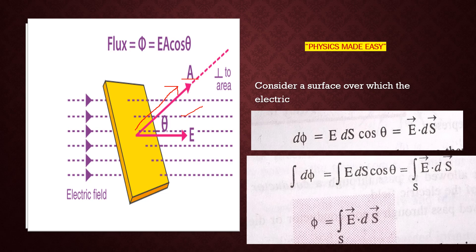We can say that electric flux through the surface element can be given by E·A·cos(theta). Here cos(theta) is the component of the electric field which is perpendicular to the surface area. So the electric flux dΦ is equal to E·dA·cos(theta) if we consider a small element of the complete area. For the complete surface area, we take the integral, and the total flux Φ is equal to the surface integral of E vector dot dS vector.